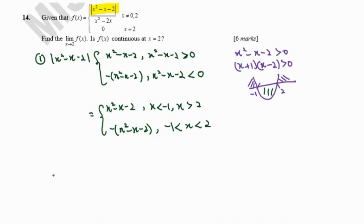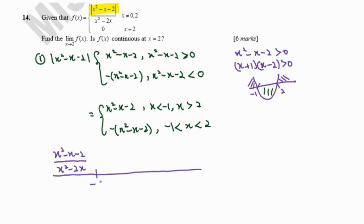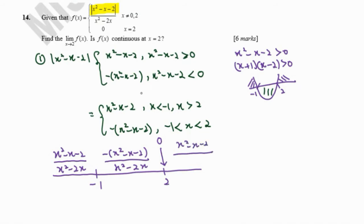Now we draw our interval so that we can define our function correctly. When x is less than negative 1, we use the positive branch, substituting into the modulus: it becomes x squared minus x minus 2 over x squared minus 2x. When x is between negative 1 and 2, we use the negative branch: negative (x squared minus x minus 2) over x squared minus 2x. When x equals 2, this expression equals 0. When x is greater than 2, we use the positive branch over x squared minus 2x. Note that x cannot equal 0, so that point does not occur.